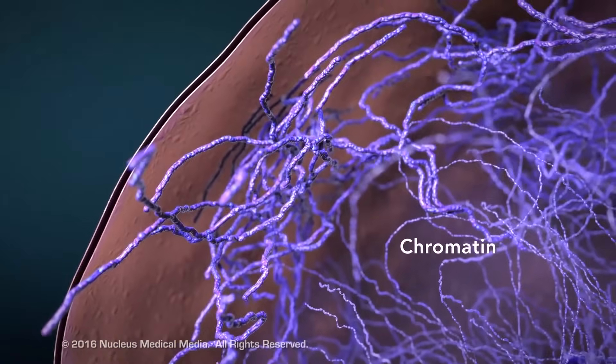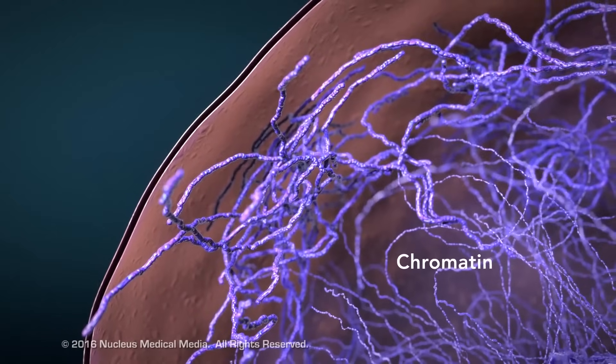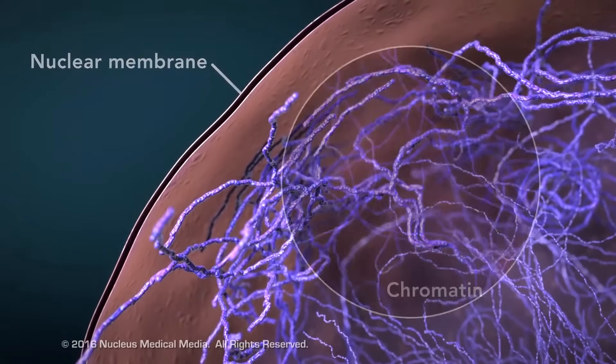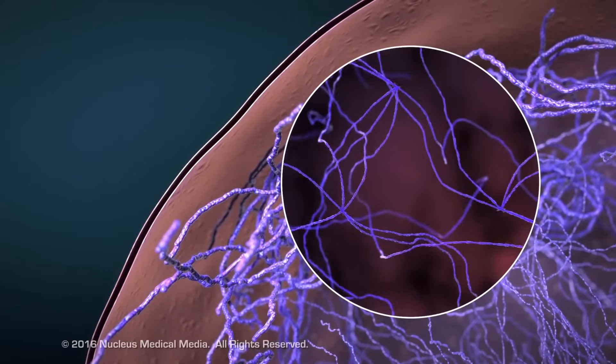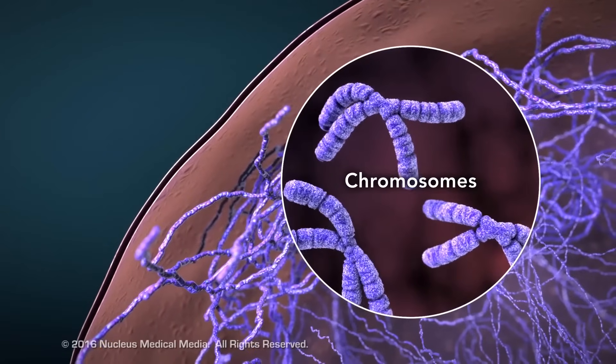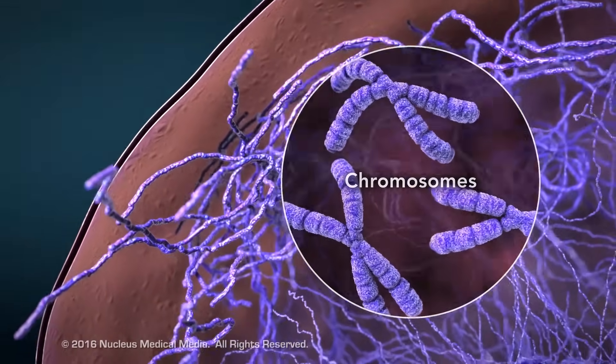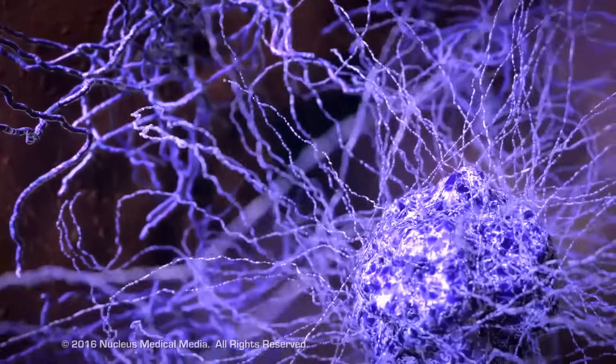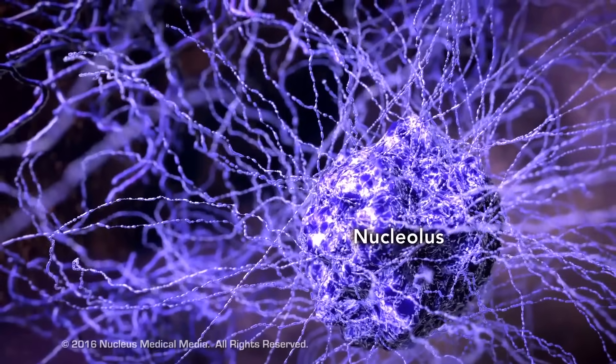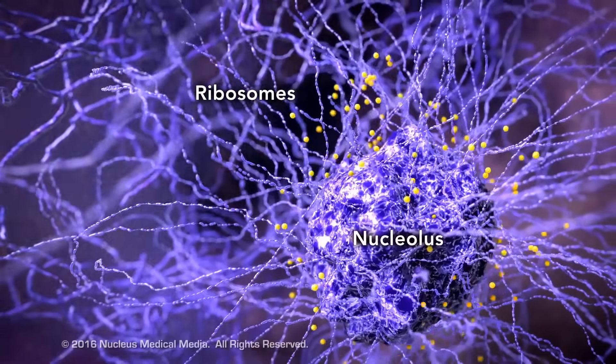Chromatin is the tangled, spread-out form of DNA found inside the nuclear membrane. When a cell is ready to divide, DNA condenses into structures known as chromosomes. The nucleus also contains a nucleolus, which is a structure where ribosomes are made.